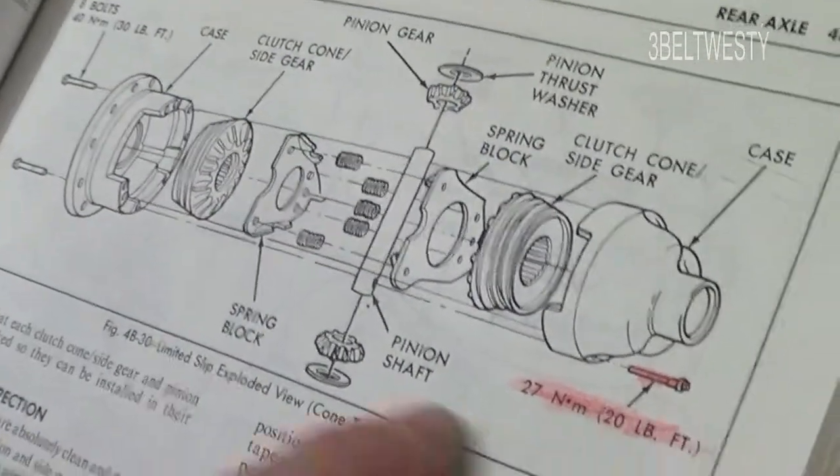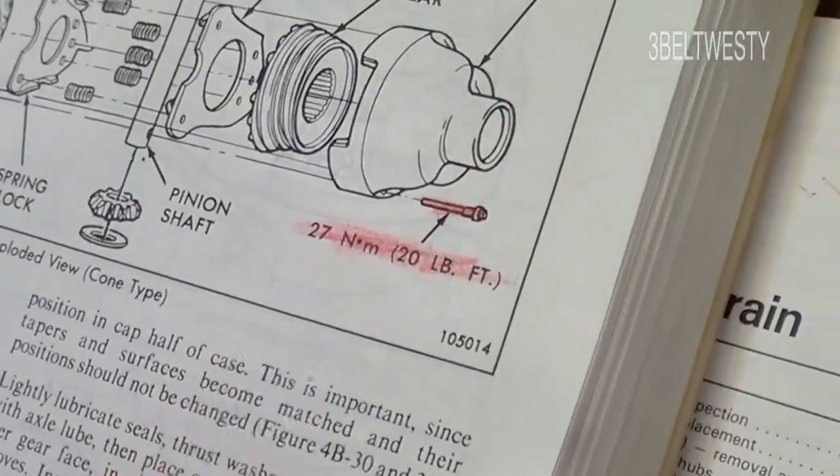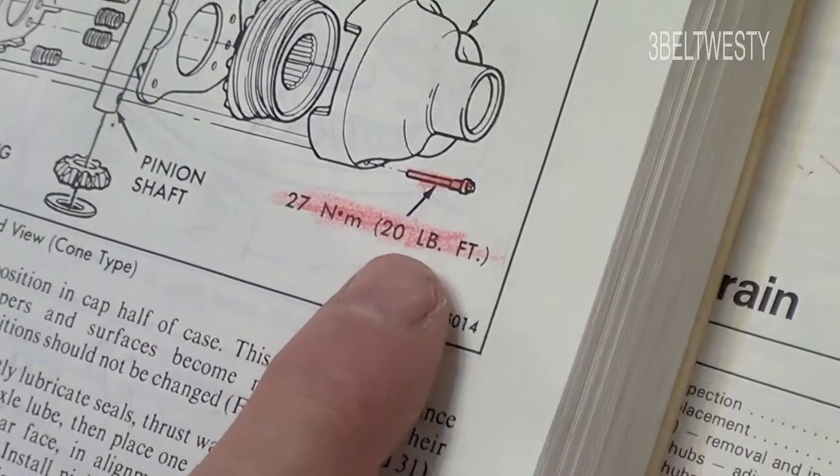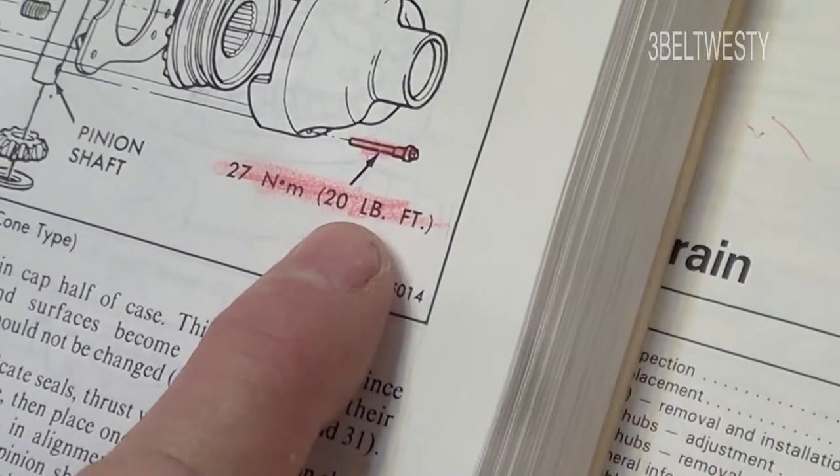But they do show it right here in an exploded view of the limited slip. It says 20 foot-pounds right here.